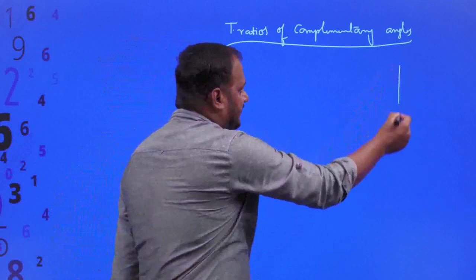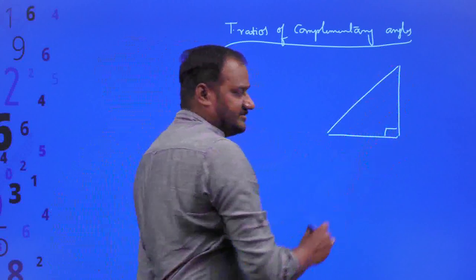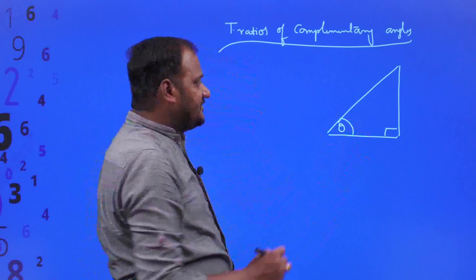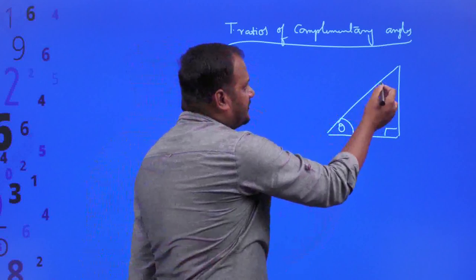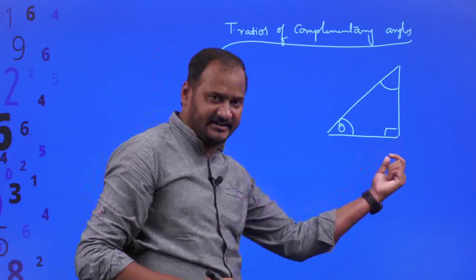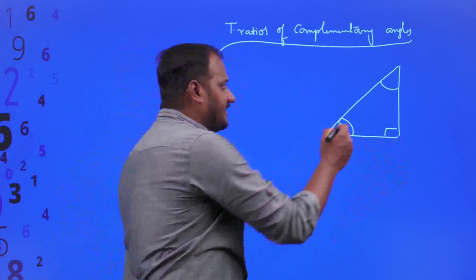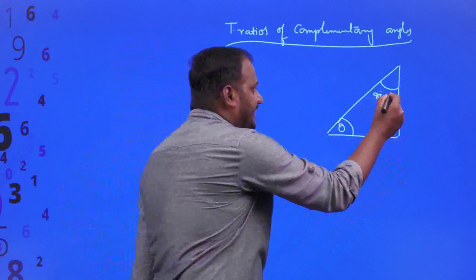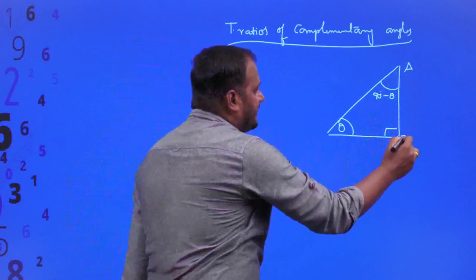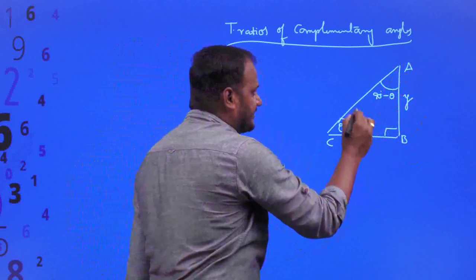Let me draw one right triangle. This is a right triangle in which this is the right angle. This angle is supposed to be theta. If this angle is equal to theta, the other angle is going to be 90 degrees minus theta, since the angles must sum to 90. Let us name this triangle ABC, with side lengths Y, X, and hypotenuse R.